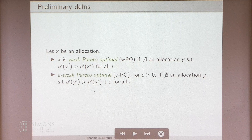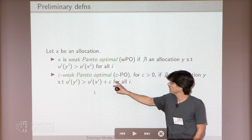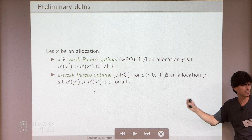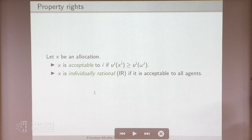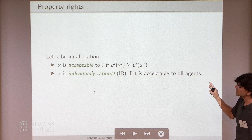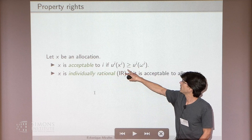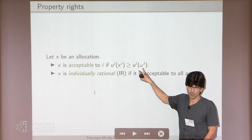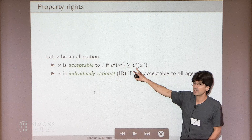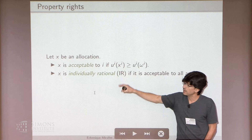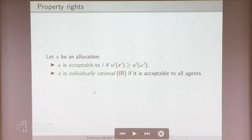More standard definitions: x is weakly Pareto-optimal if there's no allocation y which is strictly better for everyone; it's epsilon-weak-Pareto-optimal if there's no allocation better by epsilon. Property rights: in an allocation, x is acceptable to i if what i gets is not worse than i's endowment — property rights means I have the right to consume my endowment. The allocation is individually rational if it is acceptable to all agents.